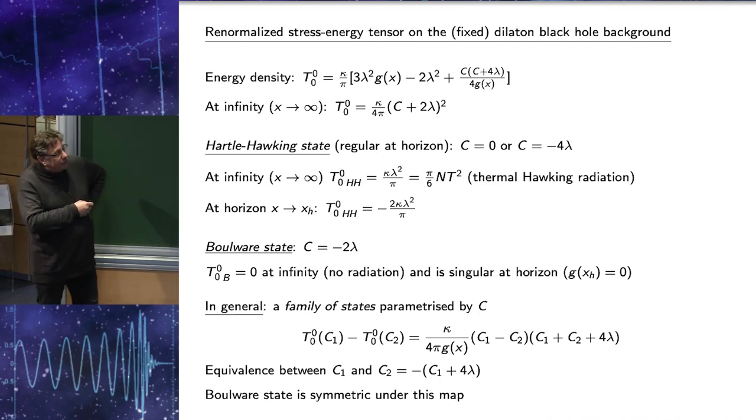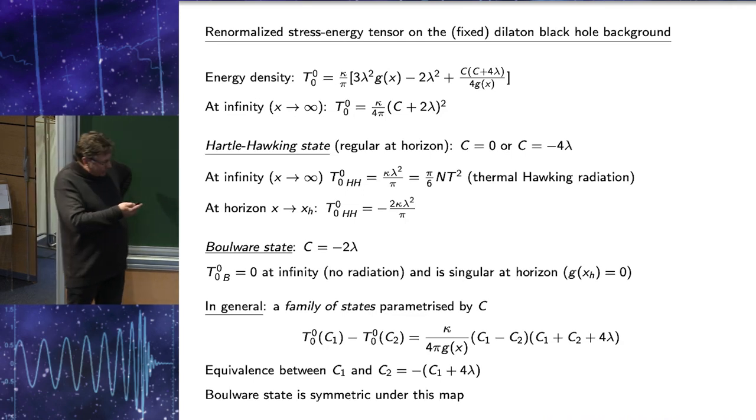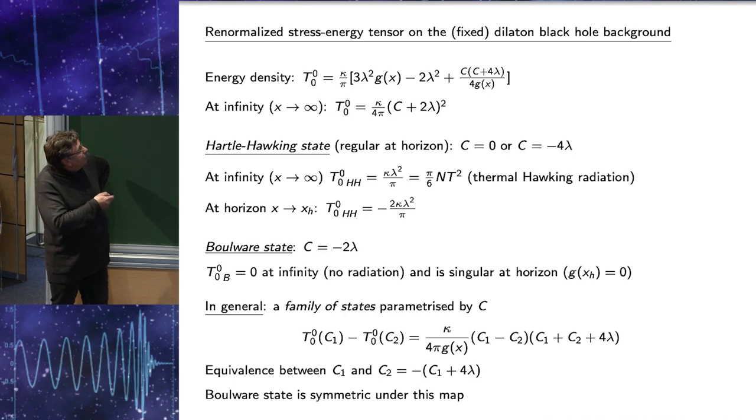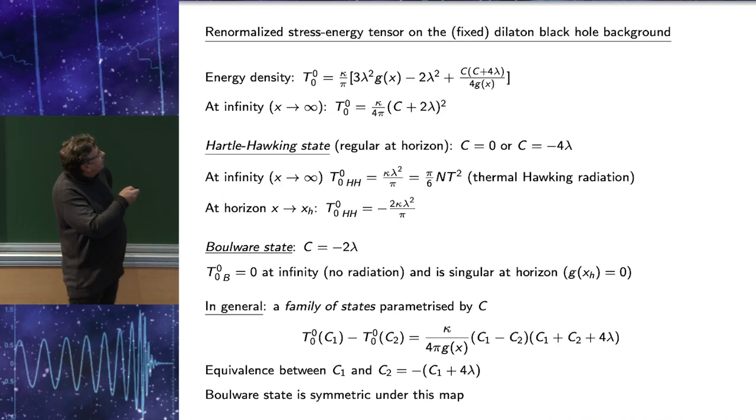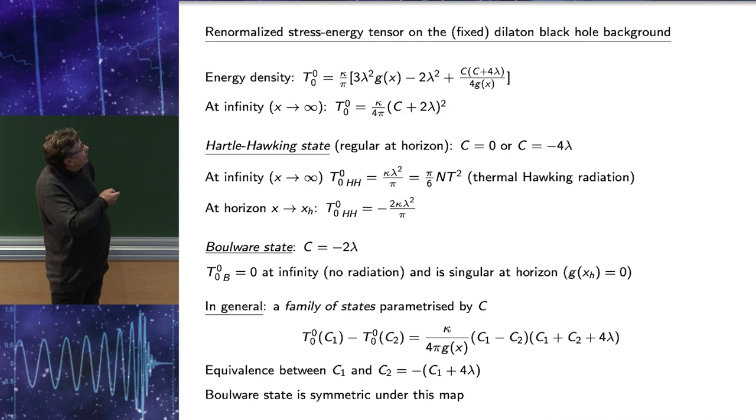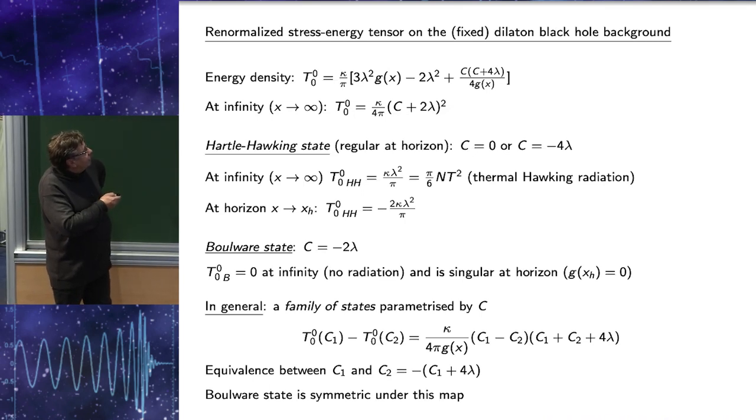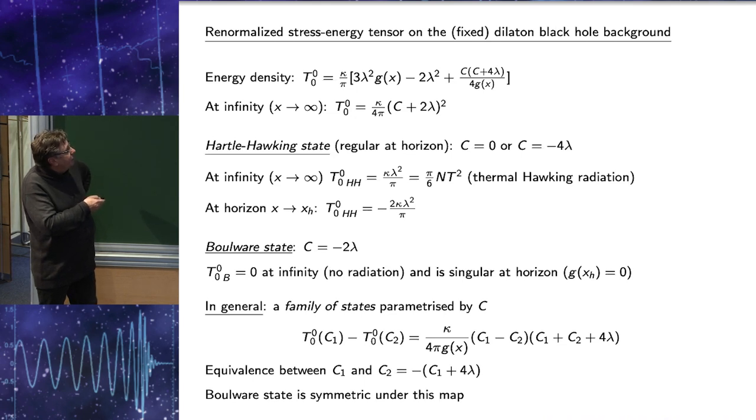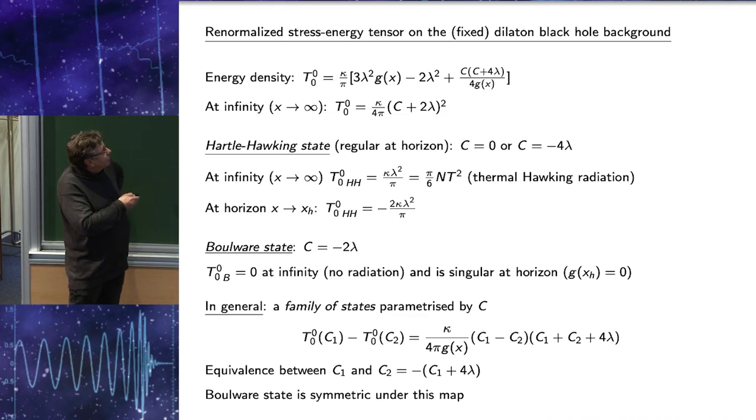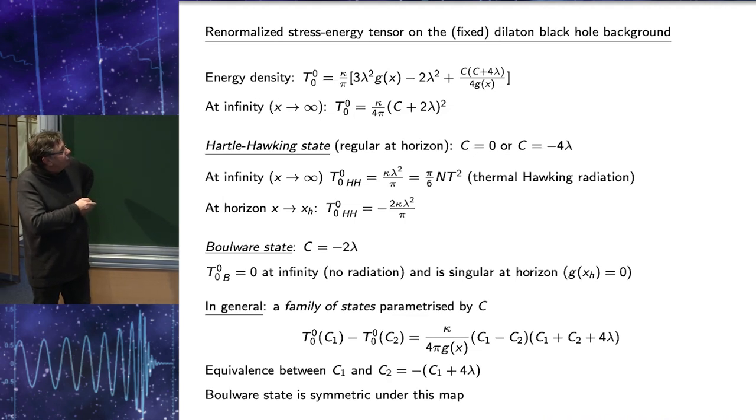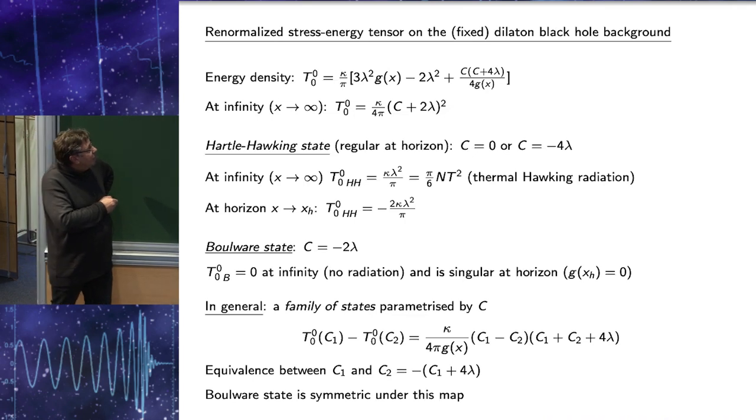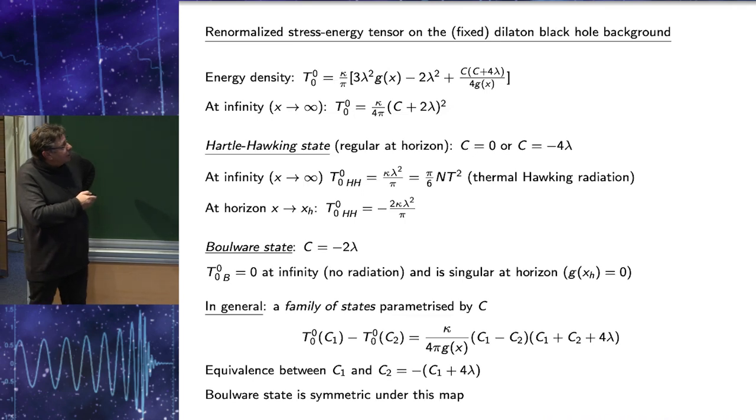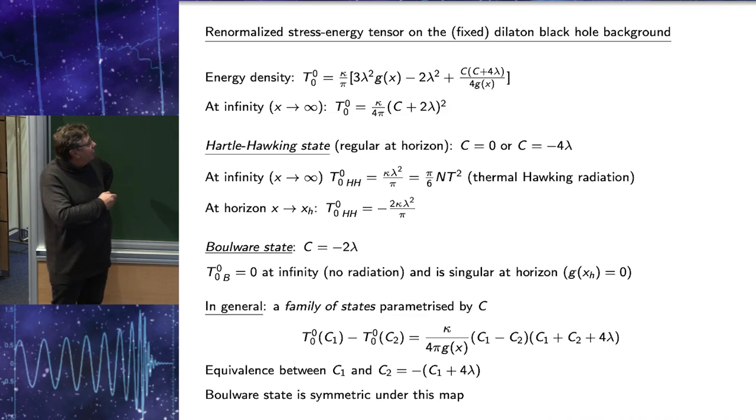Computing stress-energy tensor, which is just a variation of Polyakov action with respect to metric, we find full energy density. And we see that it contains generally a divergent term. It is divergent at the horizon where g of x is 0. At infinity, it's positive, proportional to C plus 2 lambda squared. Now I can define my Hartle-Hawking state. Hartle-Hawking state, by definition, the state which is regular at the horizon. And that's our first surprise, we have two solutions for C. C equals 0, C minus 4 lambda.